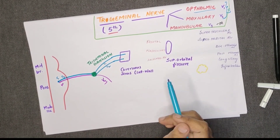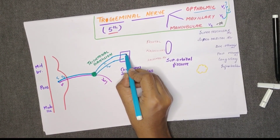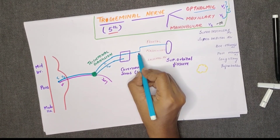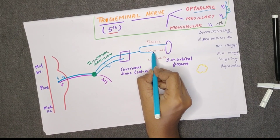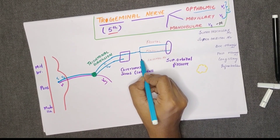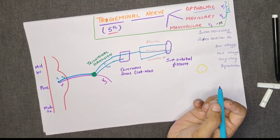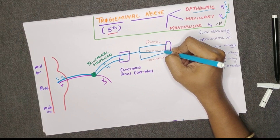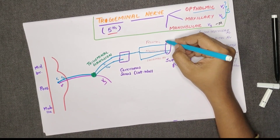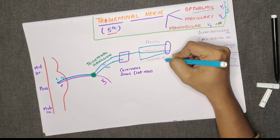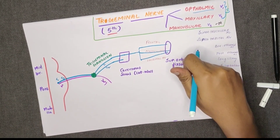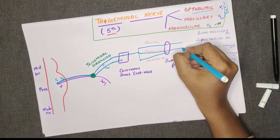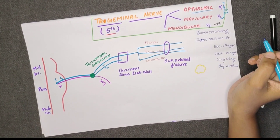Today we are going to discuss only the ophthalmic nerve. In the ophthalmic nerve, we will see the cavernous sinus. It gives three main branches: the frontal nerve, the nasociliary nerve, and the lacrimal nerve. All three branches pass through the superior orbital fissure.